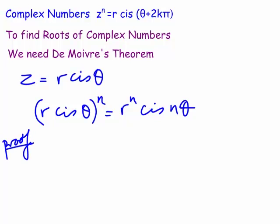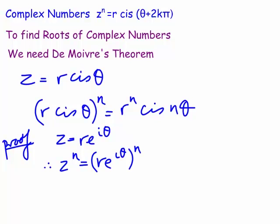Here's a quick proof using Euler's result: let z = r·e^(iθ), where e^(iθ) = cis θ. Then z^n = (r·e^(iθ))^n = r^n · e^(inθ), which is just r^n cis(nθ).